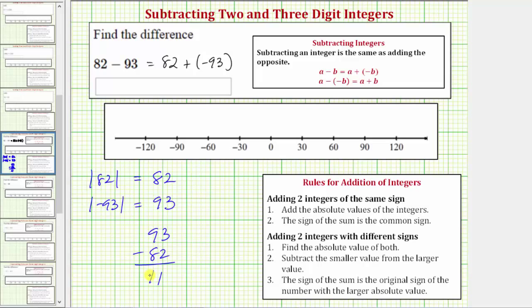And then step three, we need to determine the sign of the sum. The sign of the sum is the original sign of the number with the larger absolute value. So because negative 93 had the larger absolute value, this sum is not 11 but it's negative 11.